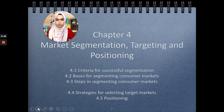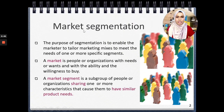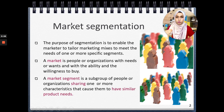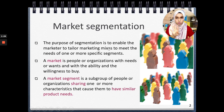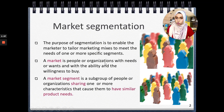Let's start with the first learning objective — the criteria for successful segmentation. First, you need to know what market segmentation is. From Chapter 1, you know that a market is people — potential buyers or customers. Segmentation is sub-grouping or dividing them into certain criteria or characteristics. The purpose of segmentation is to enable the marketer to tailor the marketing mix — your four Ps — to meet the needs of one or more specific segments. Markets can include organizations, not just consumers.